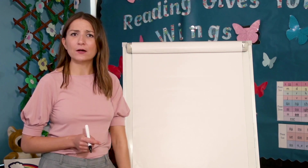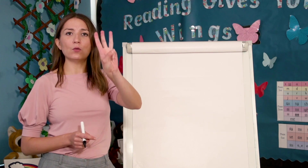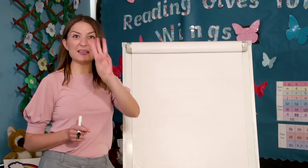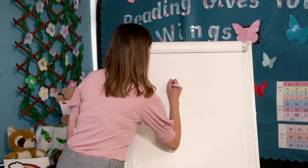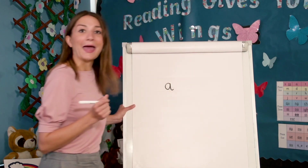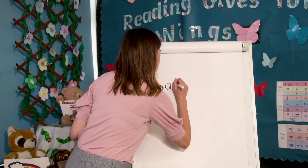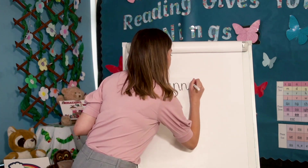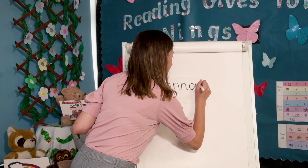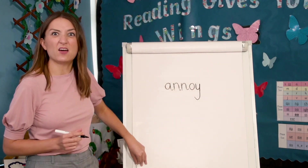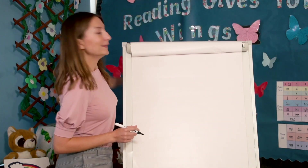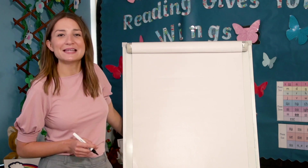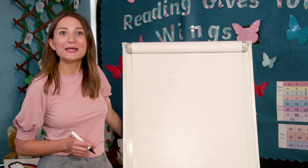Let's count how many sounds there are — annoy. That's three sounds. Watch me write annoy — I need three sounds: a, n, oy. Let's hide the word. Annoy, now you have a go. Say the word, say the sounds, write them down.